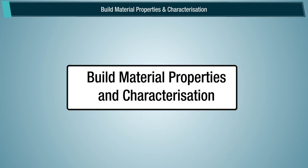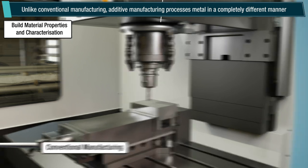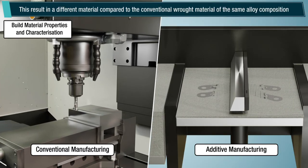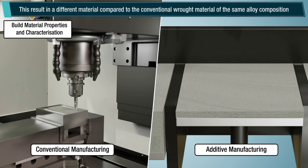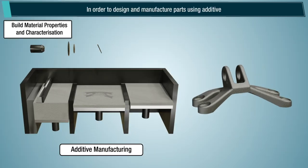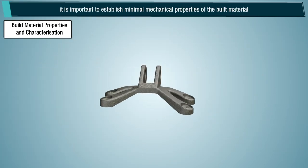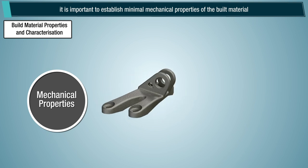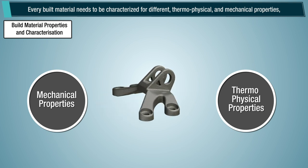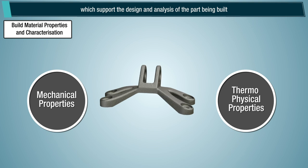Build Material Properties and Characterization. Unlike conventional manufacturing, additive manufacturing processes metal in a completely different manner. This results in a different material compared to the conventional wrought material of the same alloy composition. In order to design and manufacture parts using additive, it is important to establish minimal mechanical properties of the built material. Every built material needs to be characterized for different thermophysical and mechanical properties which support the design and analysis of the part being built.